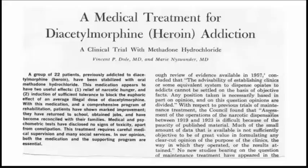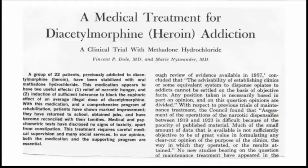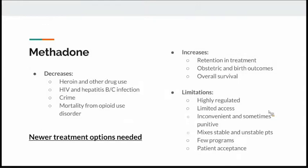In the 1960s, Dr. Dole and his wife Marie Nislander at Rockefeller University developed methadone and showed it can block receptors and reduce cravings in heroin users. Methadone reduces heroin and other drug use, HIV and hepatitis B/C infection, crime, and mortality from opioid use disorder, while increasing retention in treatment, obstetric outcomes, and overall survival. However, it is highly regulated, has limited access, is inconvenient, and programs can mix stable and unstable patients—many patients still report significant stigma at methadone programs.